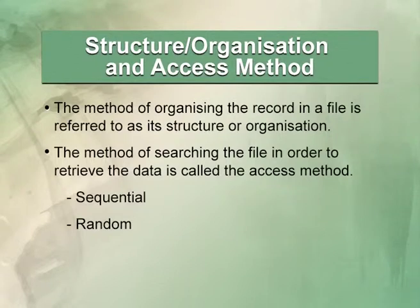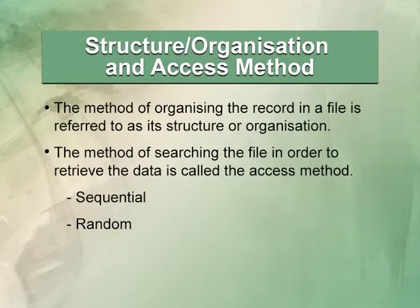The method of organizing records in a file is called file organization or file structure. The method of searching the file in order to retrieve the data is called the access method — accessing the database to find the record either randomly or sequentially. Do not confuse these two terms.